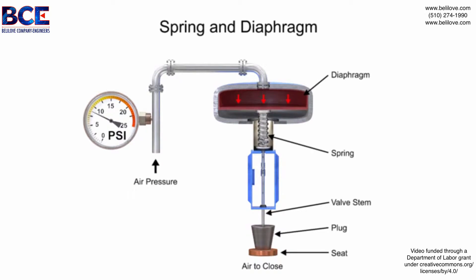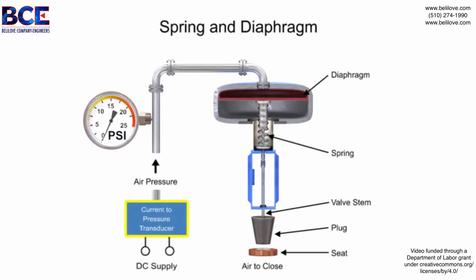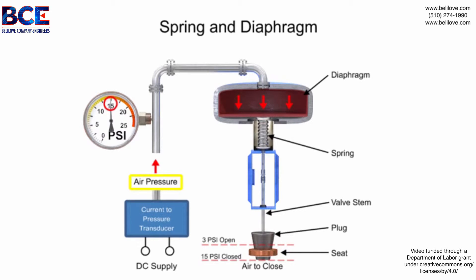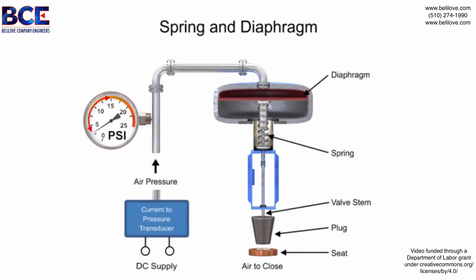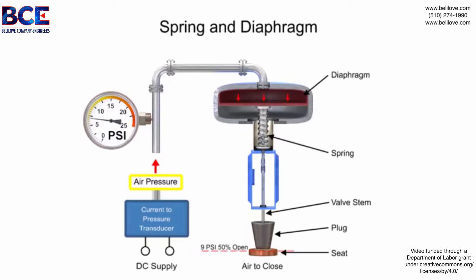As the plug meets the valve seat with no air pressure, the restrictor is pushed upward by the spring to act as a normally open control valve. To vary the position of the restrictor and flow through the valve, a current to pressure transducer can be used to provide a 3 to 15 psi signal to the diaphragm. At 3 psi the valve is maintained open, and at 15 psi the valve is maintained closed. Pressures between the 3 to 15 psi range proportionally change the flow of the valve. For example, a pressure of 9 psi applied to the diaphragm moves the spring and valve stem to 50% of operating range.